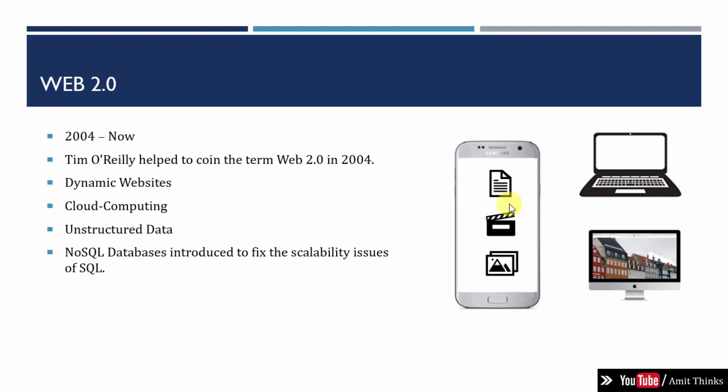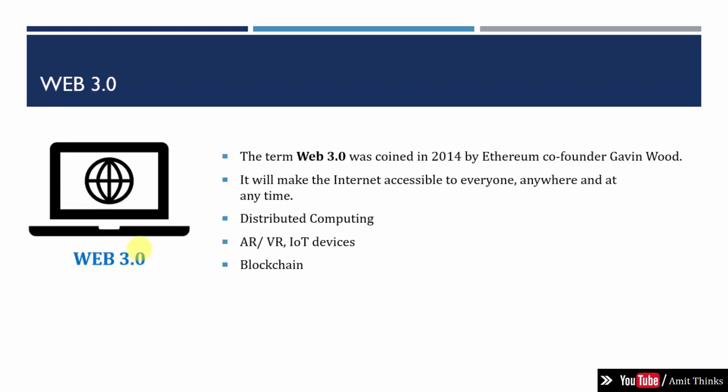NoSQL databases were introduced to fix the scalability issues of SQL. SQL was only able to store relational data — data in the form of table rows and columns — but couldn't handle images, video, surveillance, or social media data. For that, NoSQL came in, and we saw the beginning of MongoDB. This was also when dynamic websites and cloud computing concepts emerged, from 2004 till now.